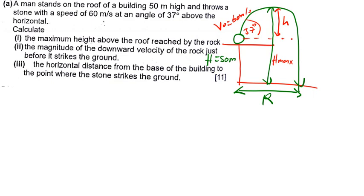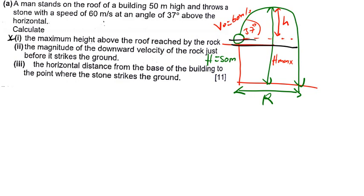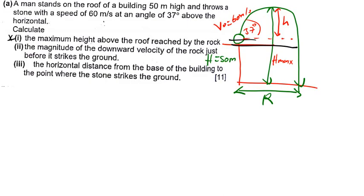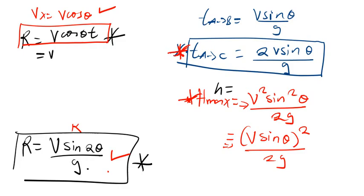The first question asks to find the maximum height above the roof — that is small h. This is exactly the same as case two. So the formula I use to find small h is: H = (V sin θ)² divided by 2G, which is the same as V² sin² θ divided by 2G.